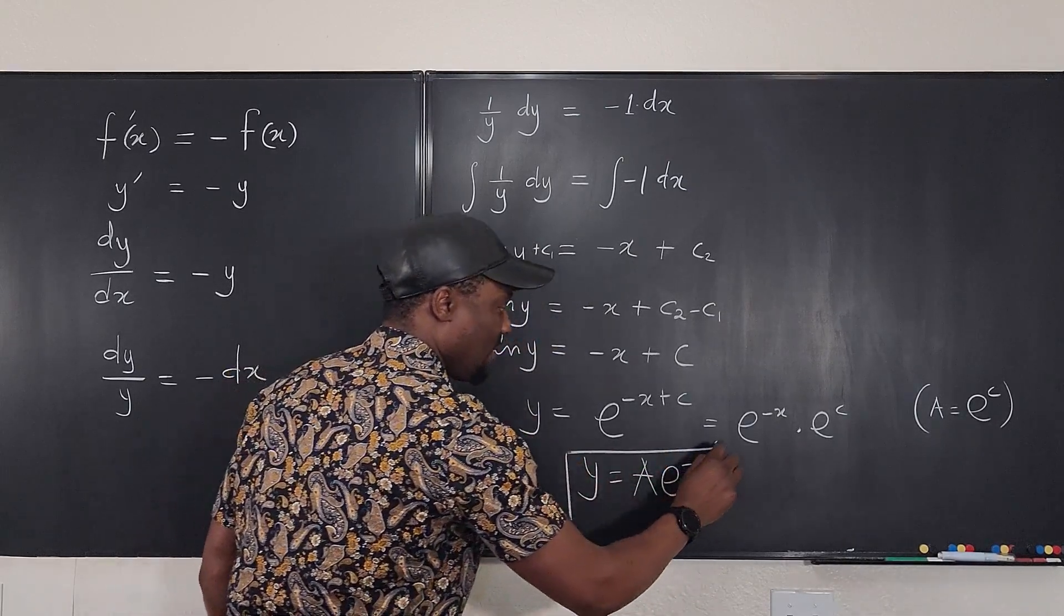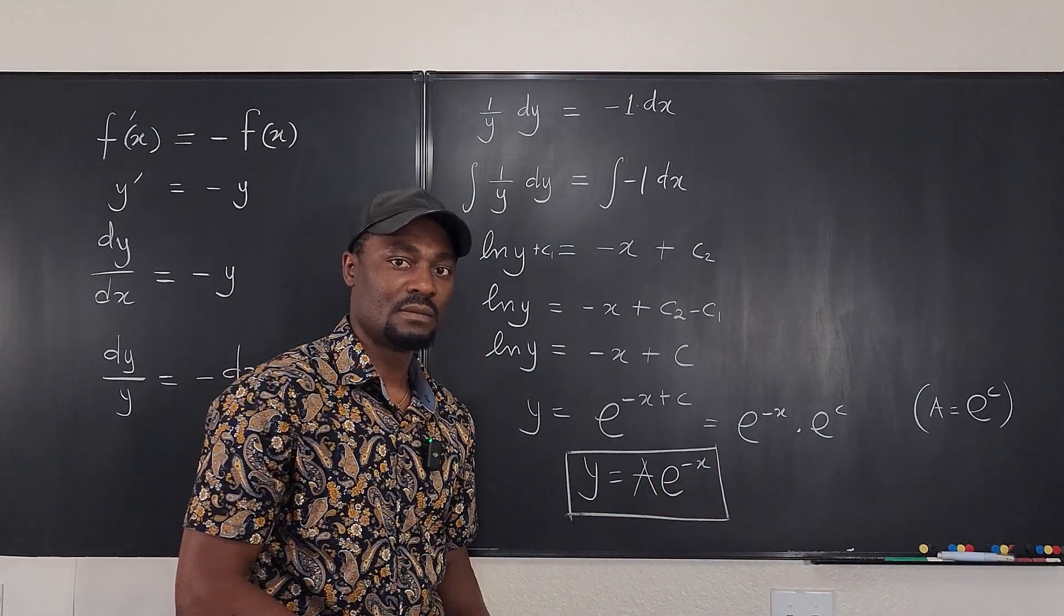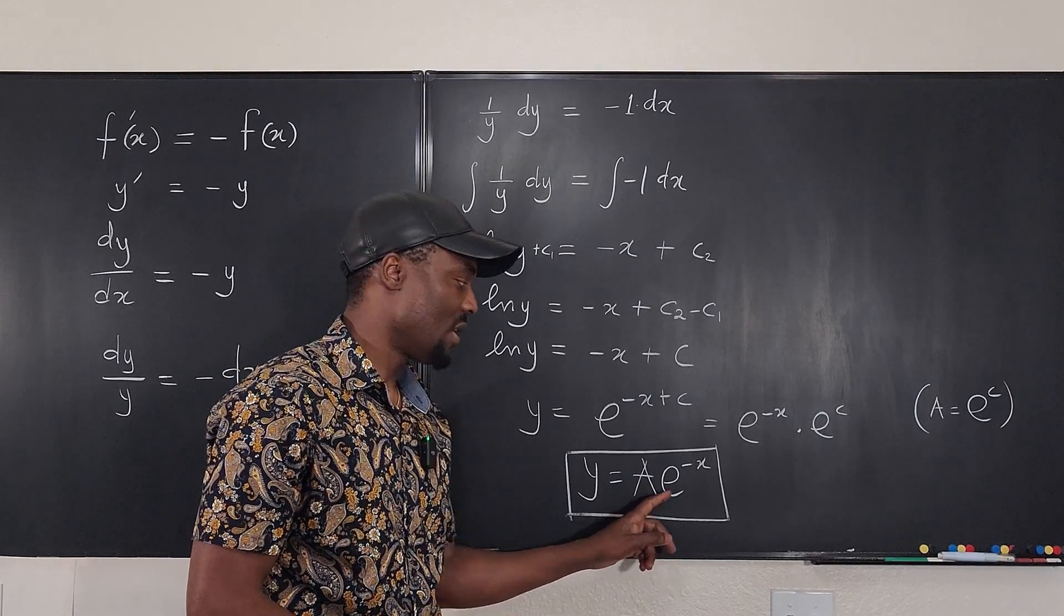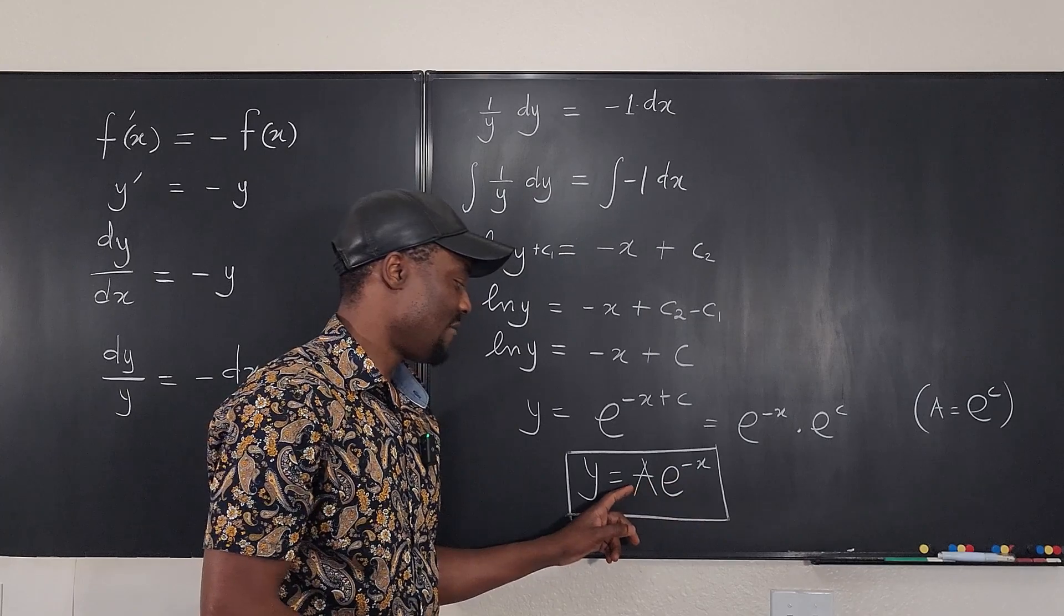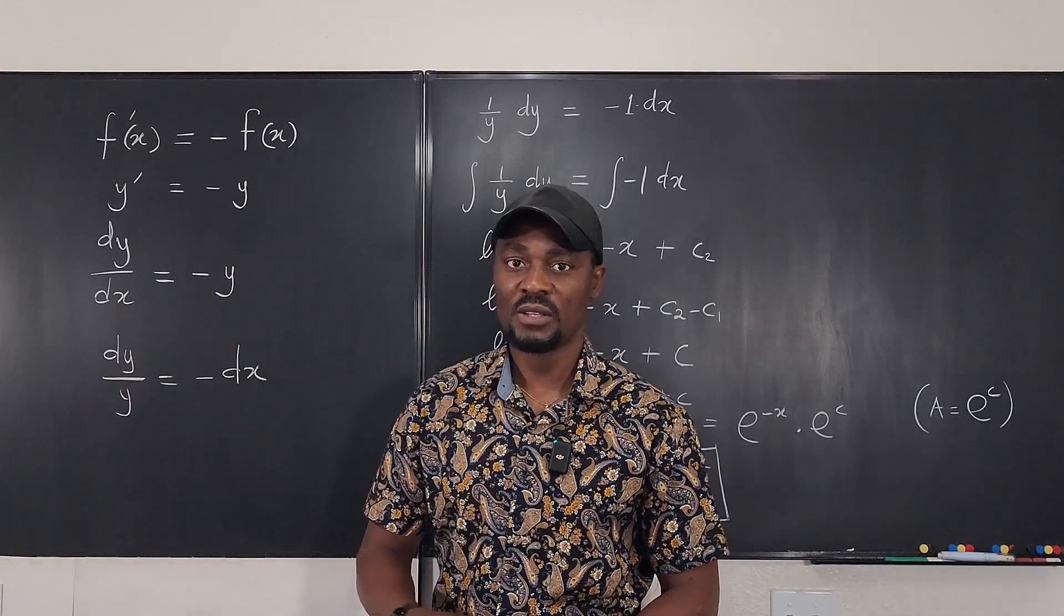And this is the function whose derivative is just the negative of itself. If we take the derivative of this. Remember, this is a constant. You're just going to get minus. Multiplying this is minus a e to the negative x, which makes this equation true.